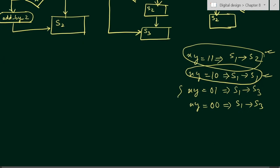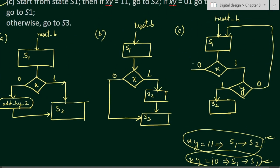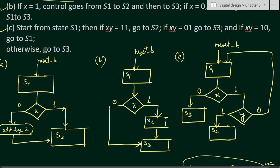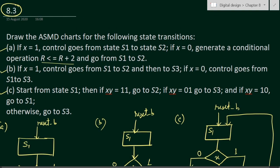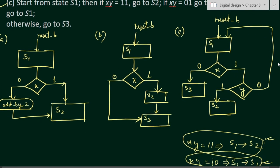Notice that when x equals zero, irrespective of the value of y, S1 always goes to S3. So you need not check the y condition when x equals zero — you can directly draw the path from S1 to S3. This is the ASMD chart for the third part of the problem. Thank you for watching; if you have any questions please put them in the comment section below.